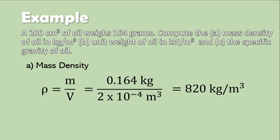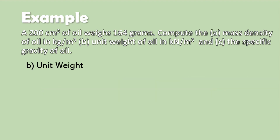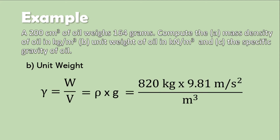That is the answer for Part A. For the unit weight, we multiply 820 kilogram per cubic meter by the gravitational acceleration 9.81 m/s². The unit weight equals 8,044.2 newton per cubic meter, or 8.044 kilonewton per cubic meter.